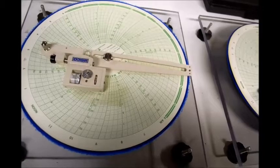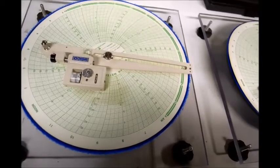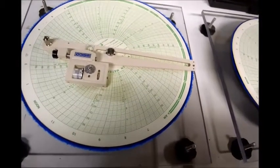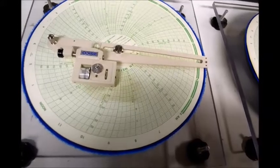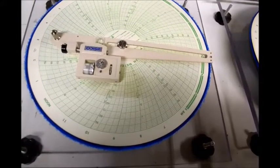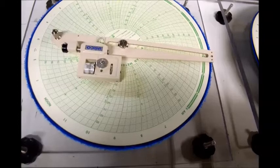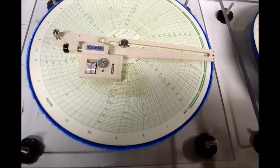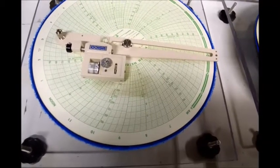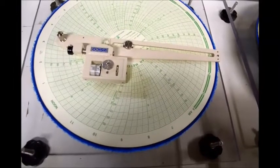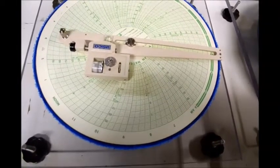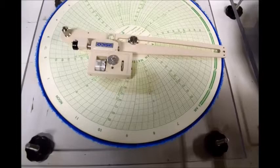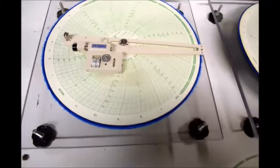As you rotate the chart a reading will be read on the vernier scale. That reading can be plugged into a formula which will give you a result that will tell you the area under the curve that you can use as a reading for the given value recorded on the chart.